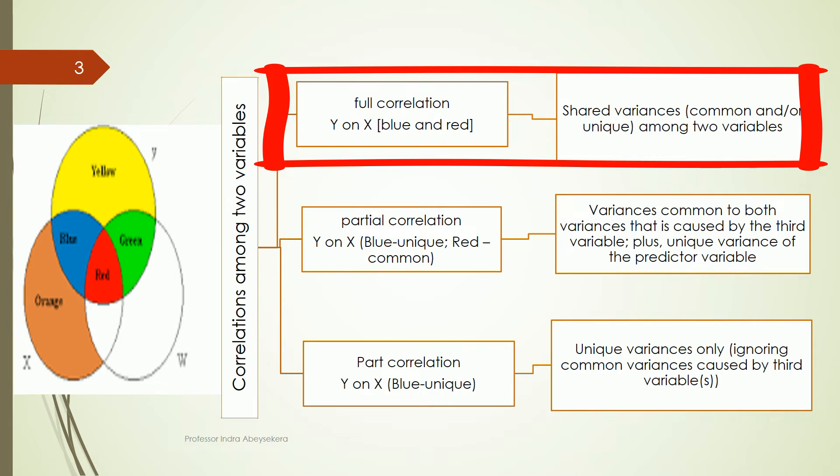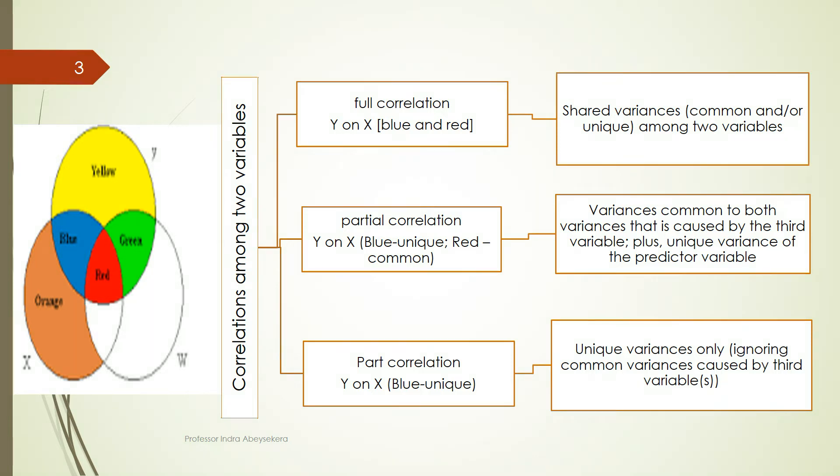The outcome variable in the diagram is shown in yellow at the top. When it comes to partial correlation, if you are examining x as our predictor variable and y as our outcome variable, then w becomes a third variable.